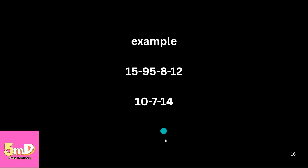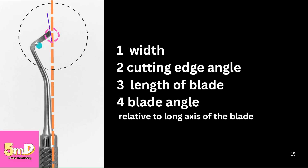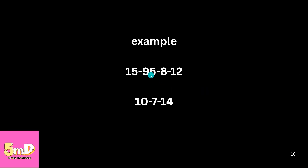This is an example of a four-number and a three-number formula. The first number is the width of the instrument in tenths of a millimeter — so 15 means 1.5 mm. The third number is the length of the blade, 8 mm. The fourth number is the blade angle, 12 degrees in the centigrade circle. The second number is the cutting edge angle, here 95 degrees. For the three-number formula: the width is 1 mm, then the length of the blade, and then the blade angle. I hope I have cleared your doubts — if you have further questions, let me know in the comments.